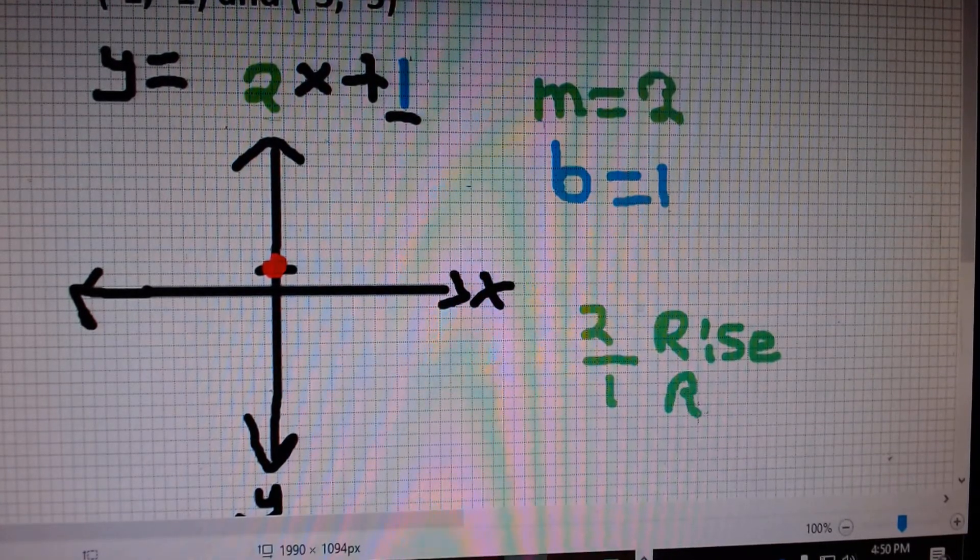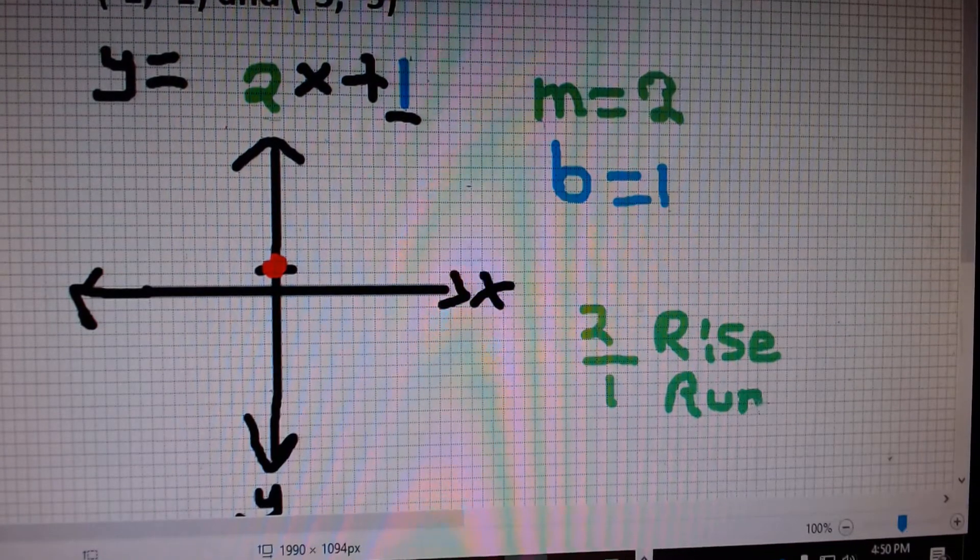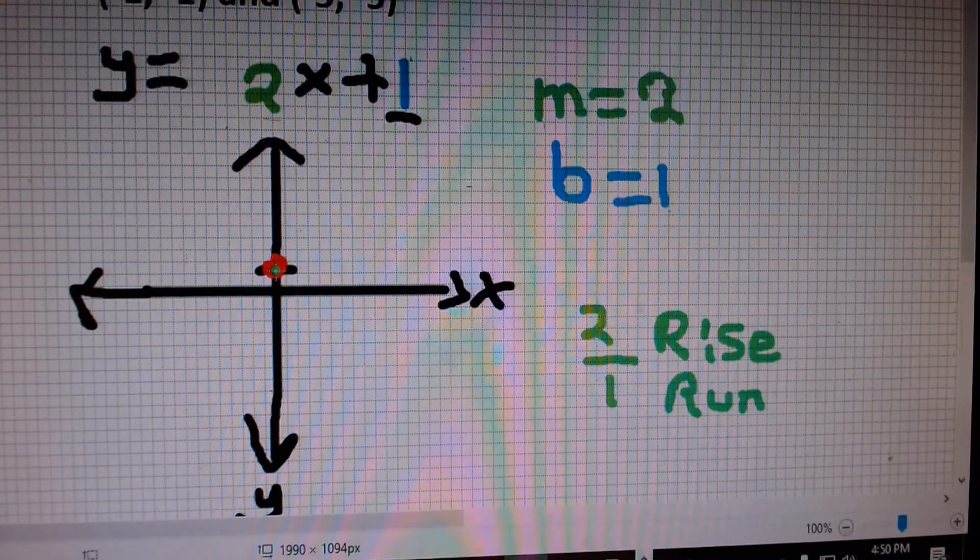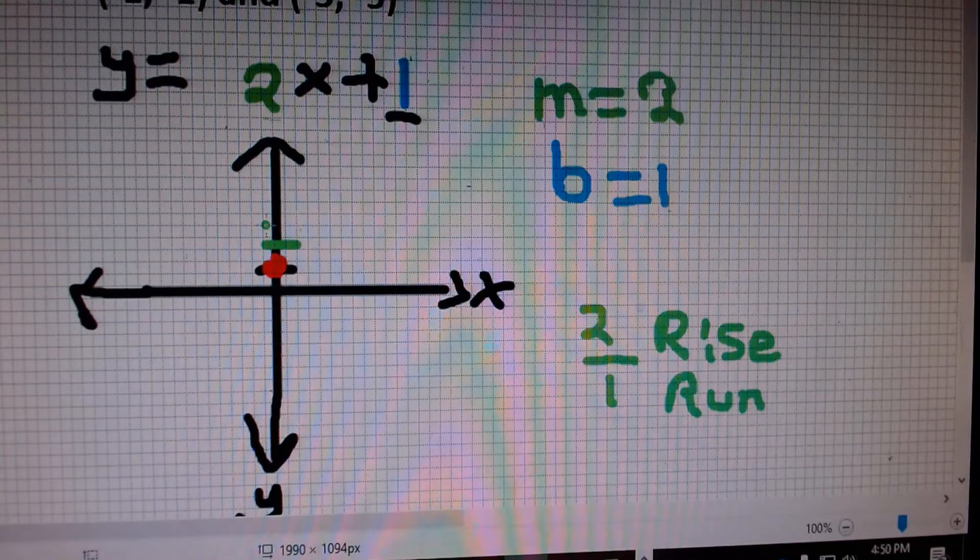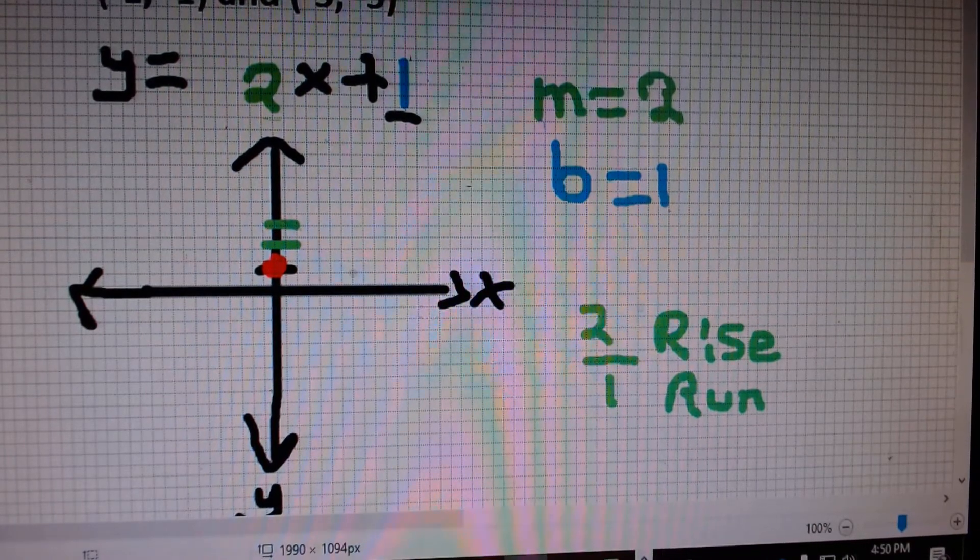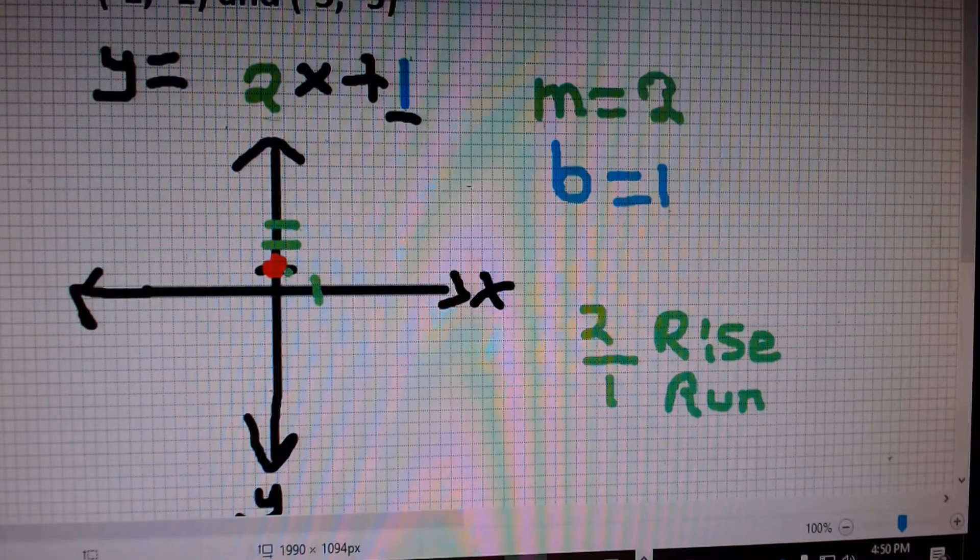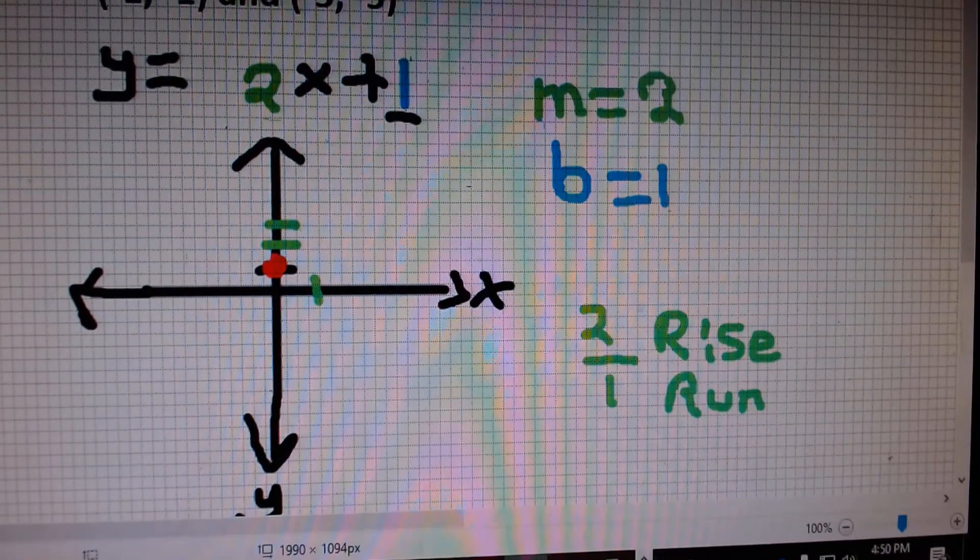And my 1 will be the run. How far does it run away horizontally from the y-intercept? So, we start at the y-intercept, and it rises 2 units. From there, I start counting 1, 2. It rises 2. But it runs 1 on the x-axis. So, up 2, over 1. I'll make my second plot.